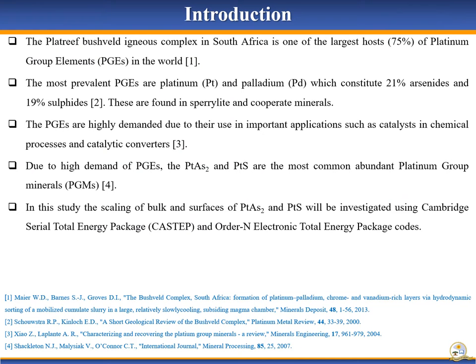South Africa is one of the countries that are rich in platinum group elements, since it holds 75% of platinum and 35% of palladium. Platinum and palladium are the most prevalent PGEs, which constitute 21% arsenide and 19% sulphide respectively. Sperrylite and cooperite are the most abundant platinum group minerals due to high demands of PGEs.